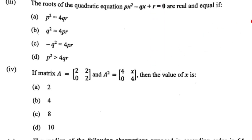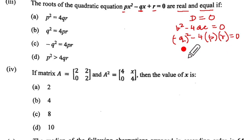The third MCQ: The roots of the quadratic equation px² - qx + r = 0 are real and equal. Real and equal means discriminant equals 0, which means b² - 4ac equals 0. This is our b, this is our a, this is our c. So b squared means (-q)² which gives us positive q² minus 4pr equals 0.